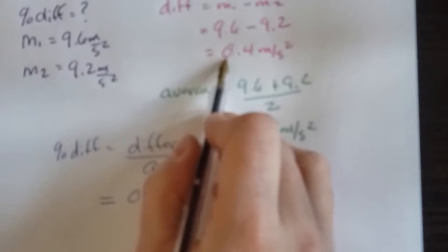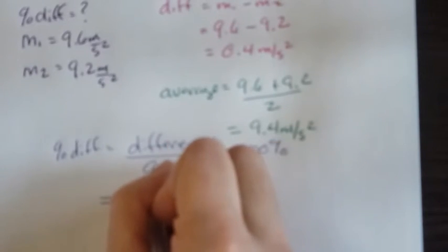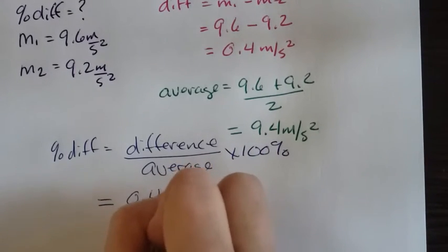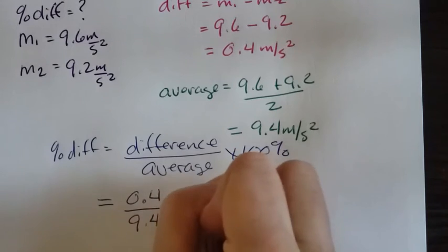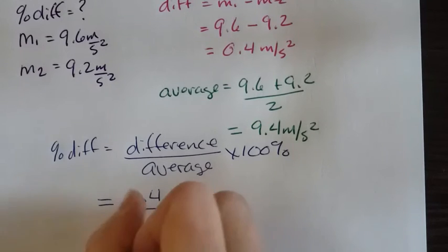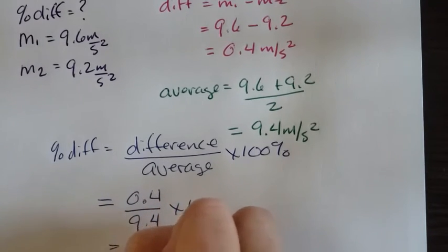Sorry, the difference was 0.4, not 0.04, divided by my average which was 9.4. So when I take 0.4 divided by 9.4, I end up with 0.043.